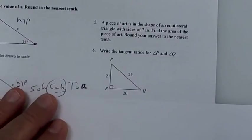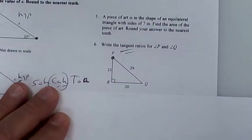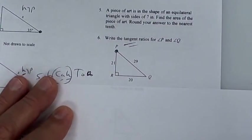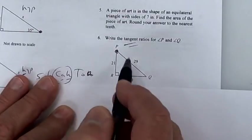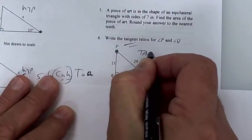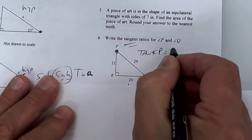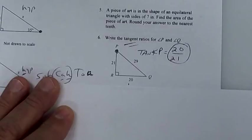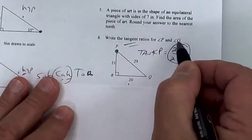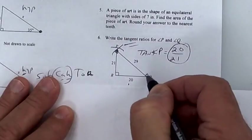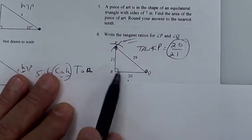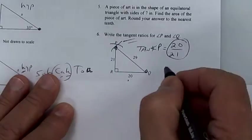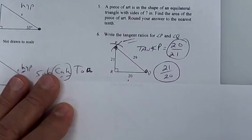This one says find the tangent ratio of P. Here's P — tangent is opposite over adjacent. So it's going to be the opposite, which is 20. The tangent of angle P would be opposite over adjacent, which is 21. They also want the tangent ratio of Q. Tangent is opposite over adjacent, so this one would be 21 over 20 if you're standing at point Q. Is everybody clear on the ratio? It's just a fraction.